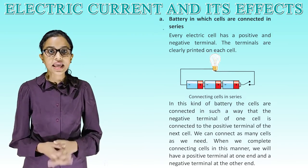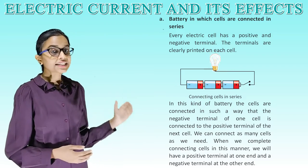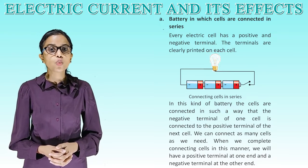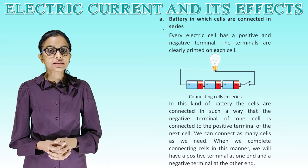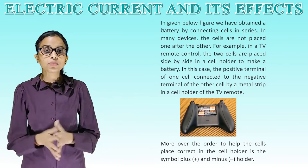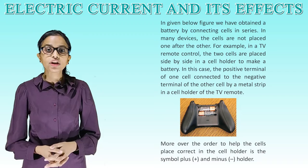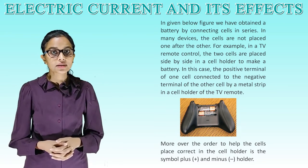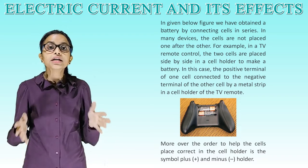Battery in which cells are connected in series. Every electric cell has a positive and negative terminal, clearly marked on each cell. In a series battery, the cells are connected such that the negative terminal of one cell is connected to the positive terminal of the next cell. We can connect as many cells as we need. This gives a positive terminal at one end and a negative terminal at the other end. In many devices, such as a TV remote control, two cells are placed side by side in a cell holder, with the positive terminal of one cell connected to the negative terminal of the other by a metal strip.